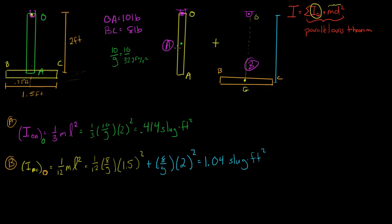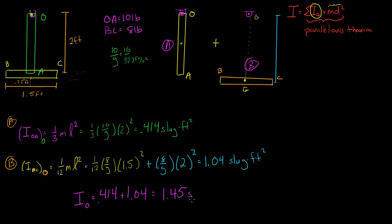We said the moment of inertia of the system about point O equals the moment of inertia of A plus the moment of inertia of B. So the moment of inertia about point O is 0.414 plus 1.04, which equals 1.45 slug·ft².